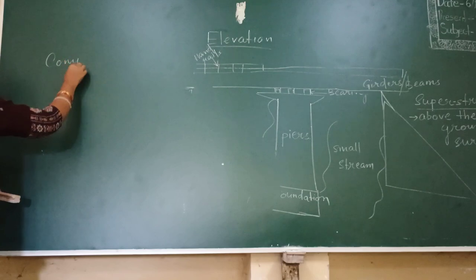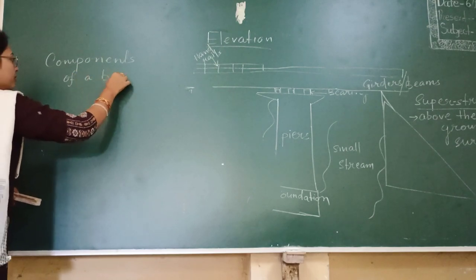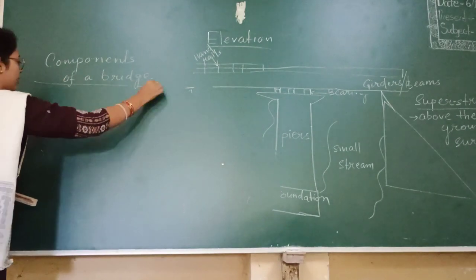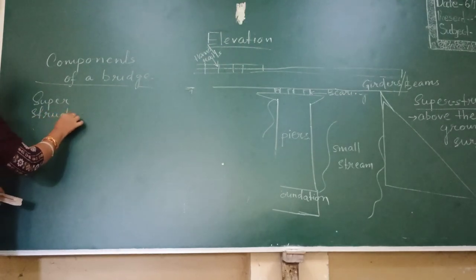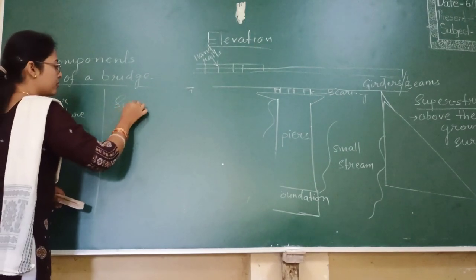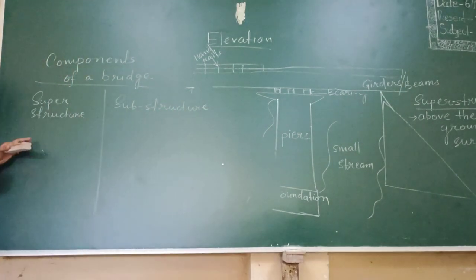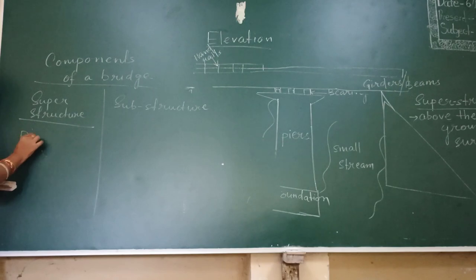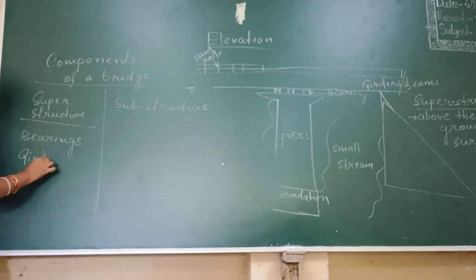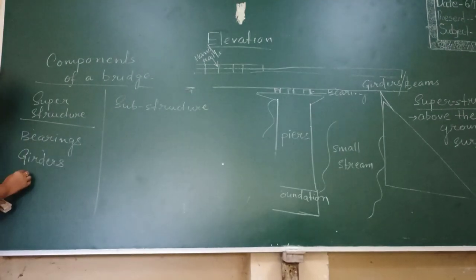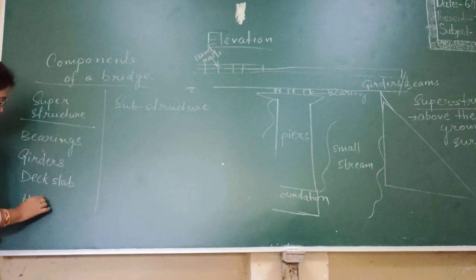So where do we write the components of a bridge? First, superstructure — which includes bearing, girder, deck slab, and handrails. And substructure includes abutment and pier.